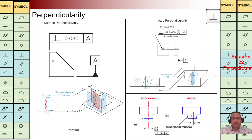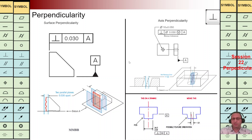On the left-hand side we have the perpendicularity symbol with the value of Tz. This surface should be perpendicular to datum A. We are going to have two boundaries perpendicular to datum A, and the distance between these two boundaries should be 0.03. This wavy surface should lie within that tolerance zone, as we can see in 3D where the red plane should be between the boundaries.